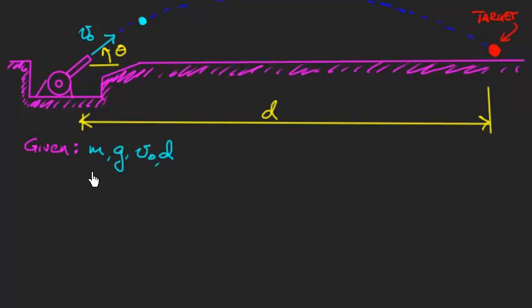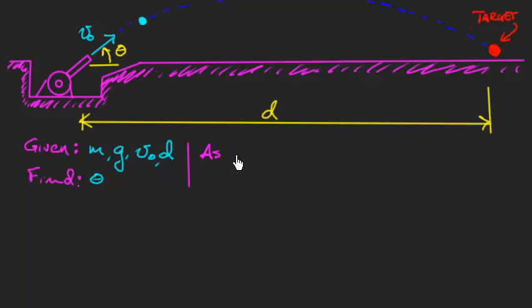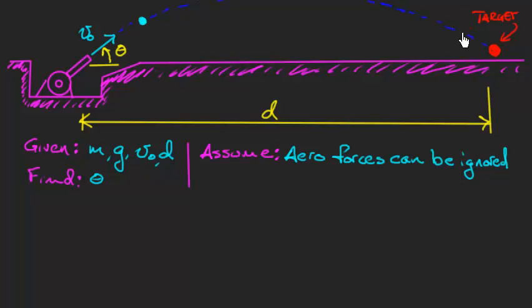First, I list my givens and what I want to find. I'm given the mass of the cannonball, speed v0, gravity, and distance d. What I want to find is the angle theta at which to fire. We're going to make a few assumptions. The first is that we're going to ignore aerodynamic forces — if the cannonball is flying through the air, we'll neglect those forces of the air on the ball.